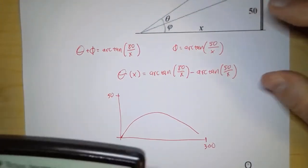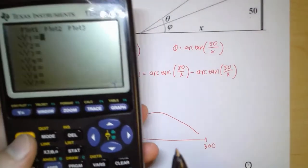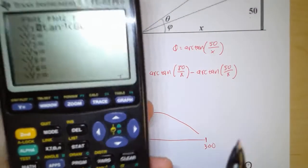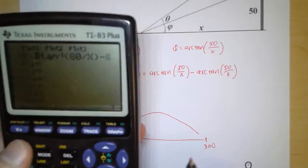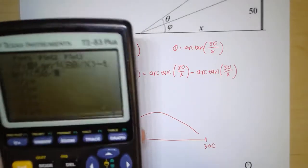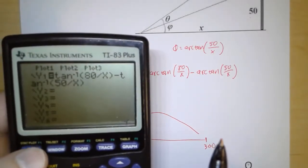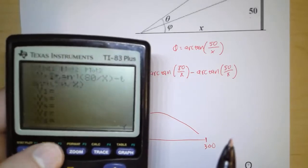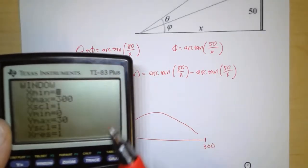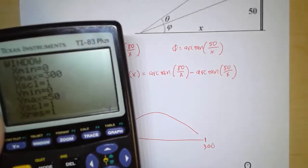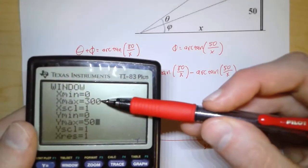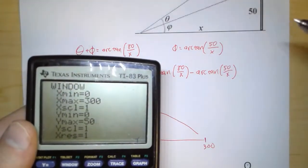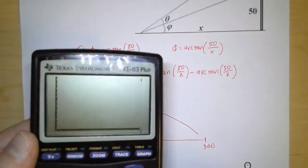So in y equals, when I type this in, I'm going to do arc tan of 80 over x. Then I'm going to subtract arc tan of 50 over x. So that's what I'm going to type in to y equals. And for my window, I'm going to set 0 to 300 and 0 to 50. So this is the range of my x values, and this is the range of my y values. So let's graph this.